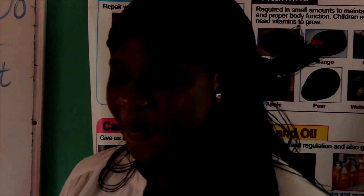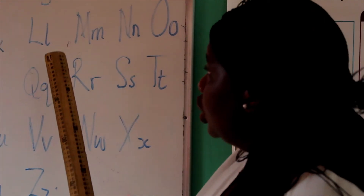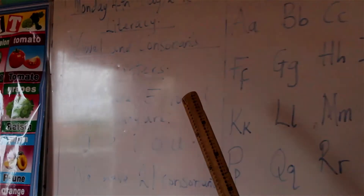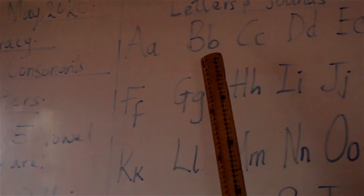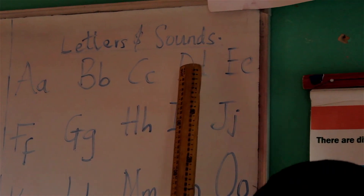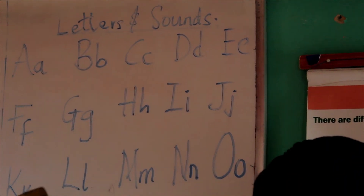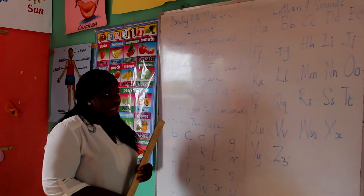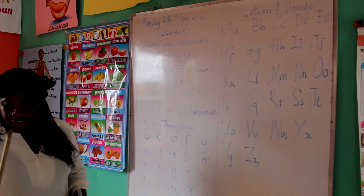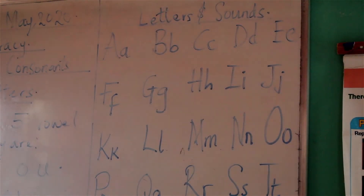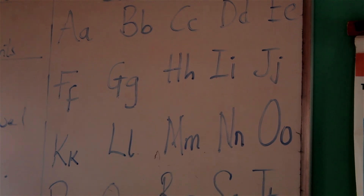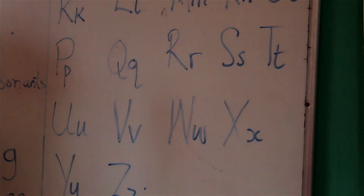Did you enjoy the class? Clap for yourself. So today don't forget how we taught two topics together: the vowels and the consonants letters, and letters and sounds. Have you written them down in your exercise books? Don't forget to write very well. Write on the lines so that next time you are reading you will be able to see and read it very well.